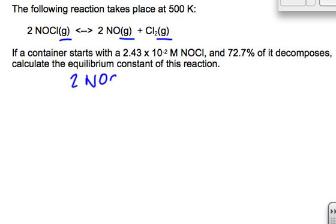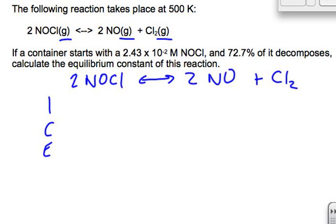I'm going to start by writing out my equation: 2NOCl becomes 2NO plus Cl2. So I have my ICE chart - initial, change, and equilibrium. My initial concentration of NOCl is 2.43 times 10 to the negative 2. If we're not told otherwise, we can assume the concentration of the other substances is 0. That's our starting amount.